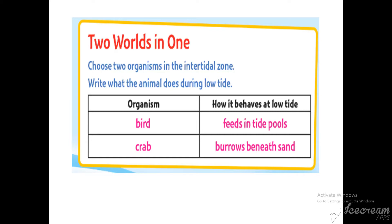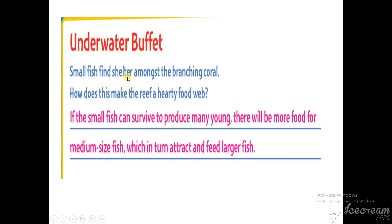For example, a bird is an organism — it feeds in tide pools, searching for food there. The crab burrows beneath the sand. During low tide, the animals are visible and predators can hunt them, so crabs burrow beneath the sand to hide. The bird feeds in tide pools, and small fish find shelter amongst the branching coral.